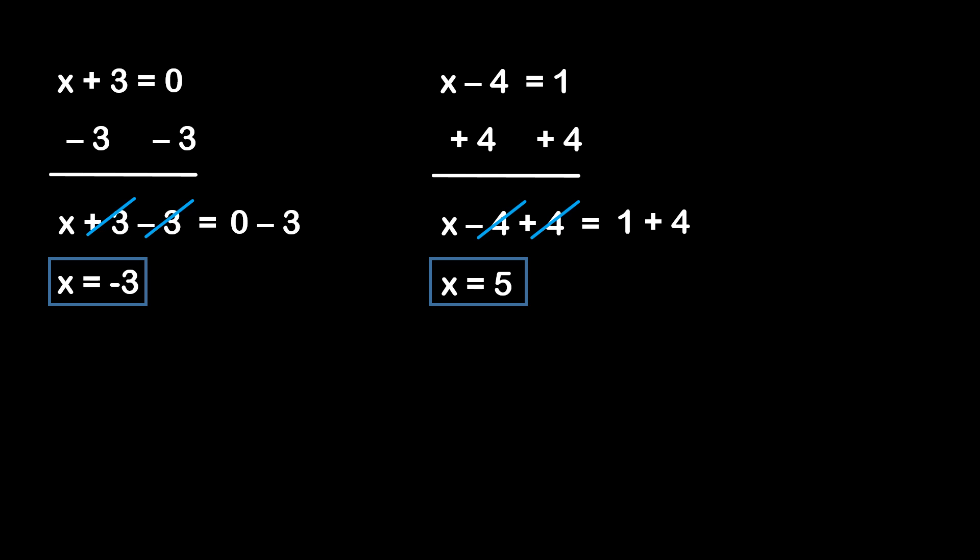It would be really nice to have some method to check our answers, just to quickly see if they're correct. The way we're going to do that is by substituting the solution for x back into the equation. Looking at the first example, we established that x is equal to negative 3. Plugging that back in, we get negative 3 plus 3 is equal to 0, which gives us 0 is equal to 0. We know that statement is correct, which means we got the right answer.